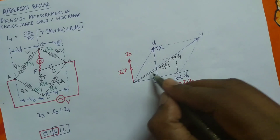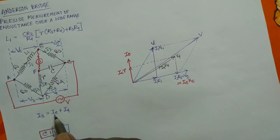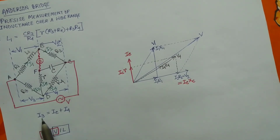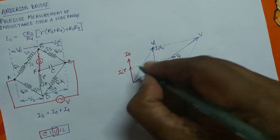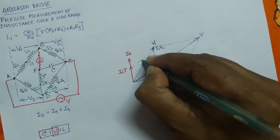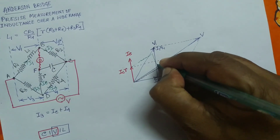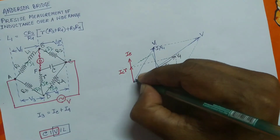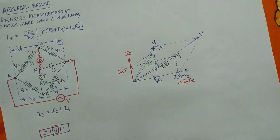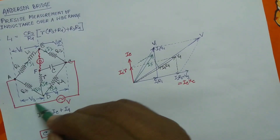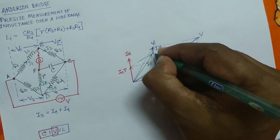Since V4 is the voltage drop across DC, the current through R4 is I4, in phase with V4. The current Ic and I4 are now known in direction, and their phasor addition gives I3. The resultant of Ic and I4 is I3.